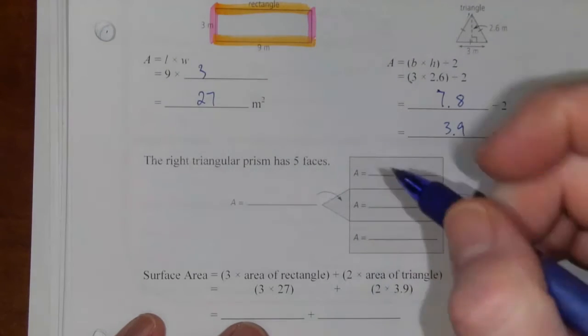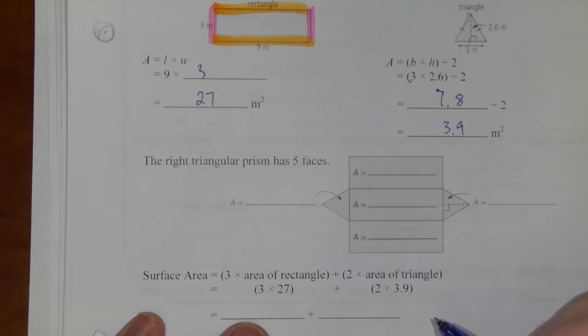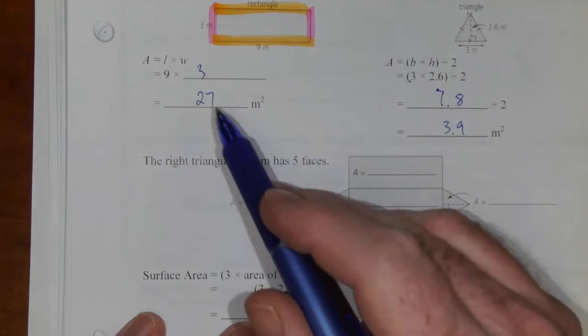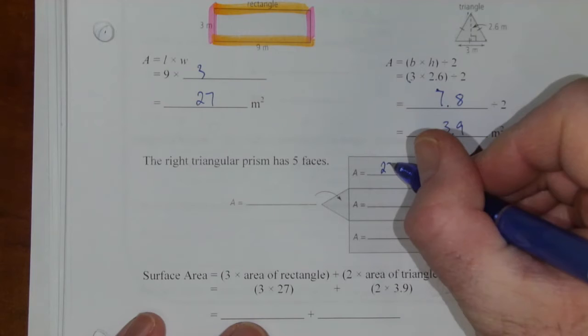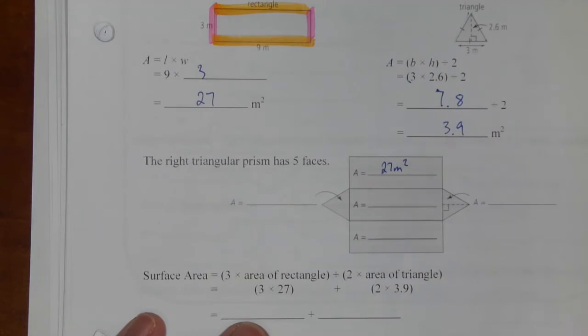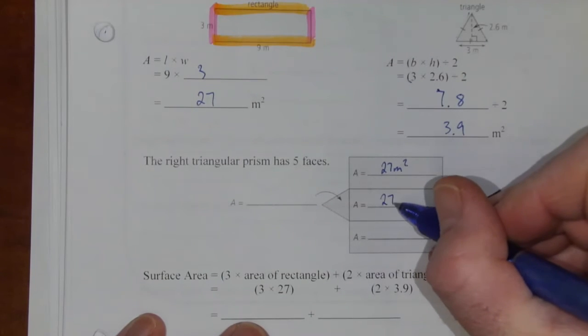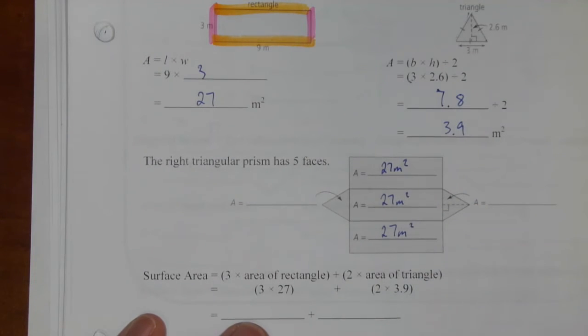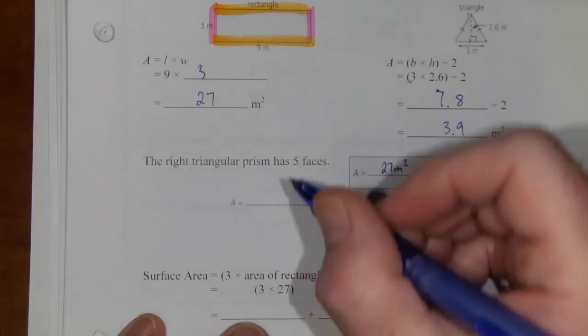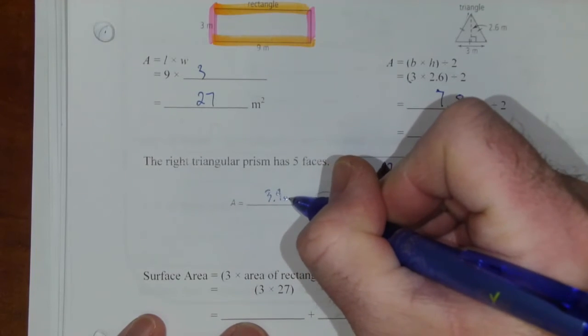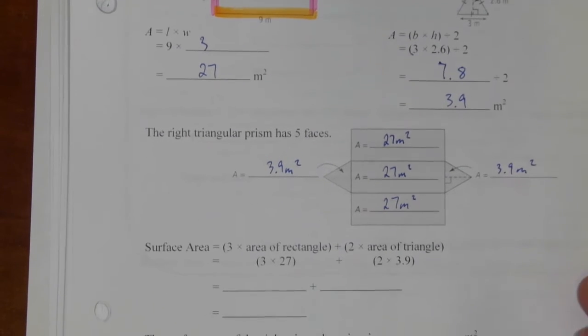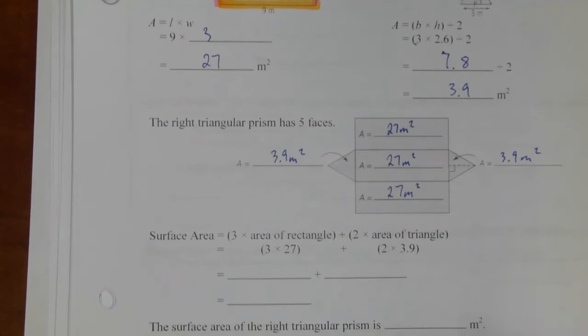So let's look at our net and figure out what we have to put together. The rectangles, 9 by 3, are all 27 meters squared. So that top one is 27 meters squared. So is the middle one. And so is the bottom one. The triangles are both 3.9 meters squared.